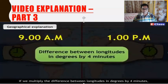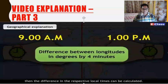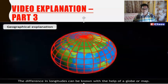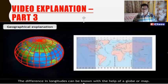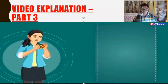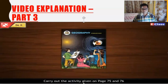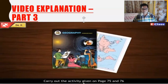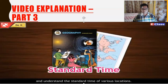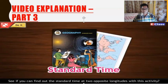As the distance between two longitudes increases, their local time also starts differing. If we multiply the difference between longitudes in degrees by four minutes, then the difference in the respective local times can be calculated. The difference in longitude can be known with the help of a globe or map.